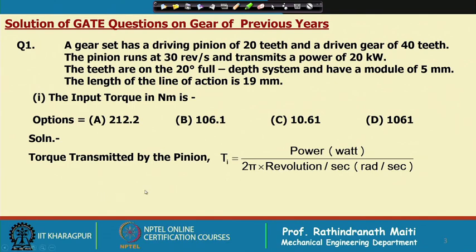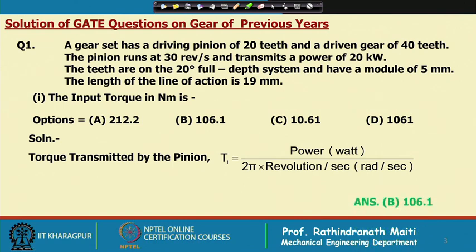The torque transmitted by the pinion equals the input torque Ti, which is equal to power expressed in watts divided by the angular speed in radians per second. The speed is 30 revolutions per second, so multiplying by 2π gives the angular speed. Substituting the values, we get the answer as 106.1 Newton-meter, so we put the tick on B.